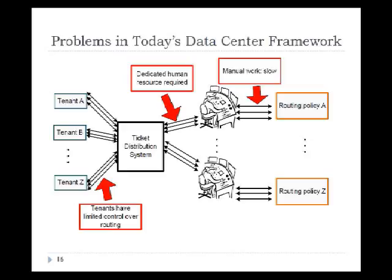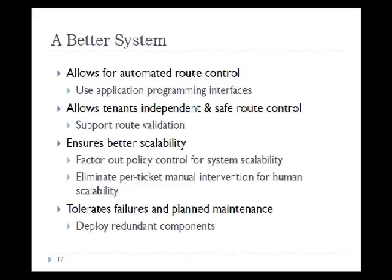Based on these problems, a good system should have the following properties. First, it should allow for automated route control through an application programming interface. Second, it should allow tenants independent and safe route control, and validate any requests they make. Third, it should ensure scalability — at the system level by factoring out policy control, and at the human resource level by eliminating the need for a dedicated admin per ticket. Lastly, it should tolerate failures and planned maintenance through redundant components.